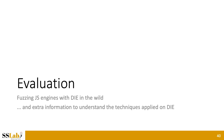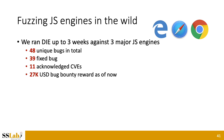I will now show evaluation results from fuzzing JavaScript engines with DAI in the wild. To test DAI with commercial browsers, we ran it for up to three weeks against three major JavaScript engines used in Microsoft Edge, Apple Safari, and Google Chrome. As a result, we found 48 unique bugs in total. Among them, 39 bugs have been fixed, and 11 bugs are acknowledged as CVEs. We also received $27,000 USD in bug bounty rewards.